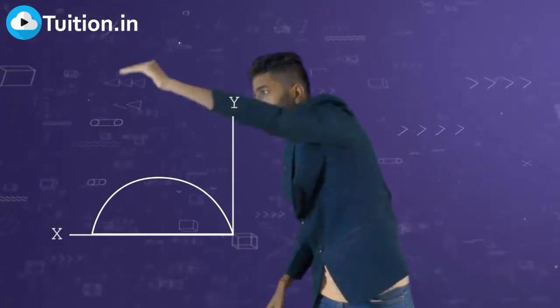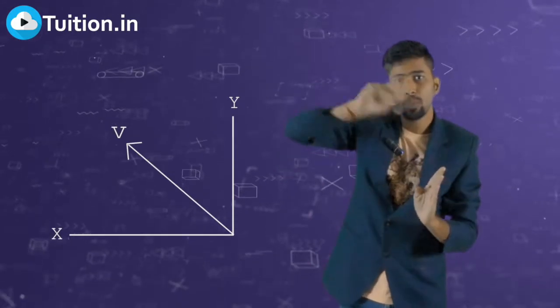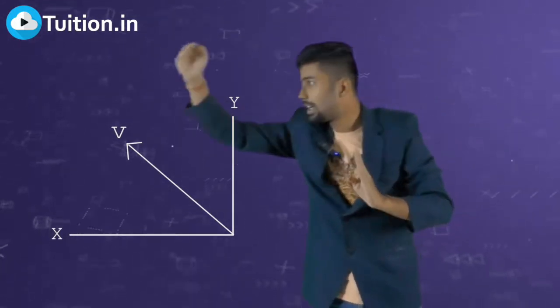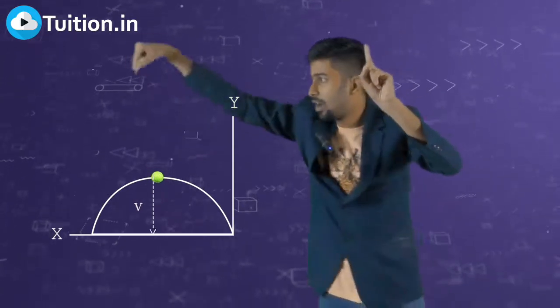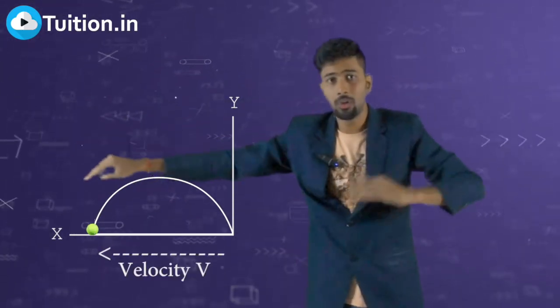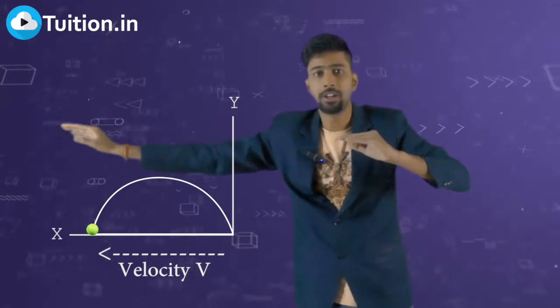And then by the time it comes here, the velocity that you threw with, let it be V, it again comes down with V. So the Y component of velocity which was VY upwards, now becomes VY downwards when it comes on the ground. But the X velocity remains unaltered.